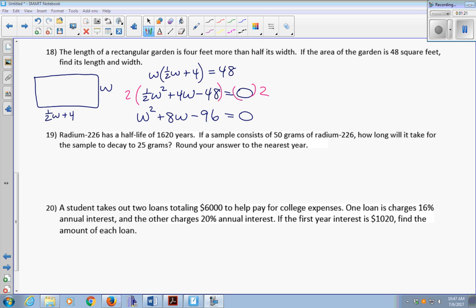The quadratic formula says that W equals the opposite of B plus or minus the square root of B squared minus 4AC all over 2A. So the opposite of B, that would be negative 8, plus or minus the square root of B squared is 64 minus 4 times 1 times negative 96. That should come out to 448, you can check me on that, but I'm pretty sure it's 448, all over 2.